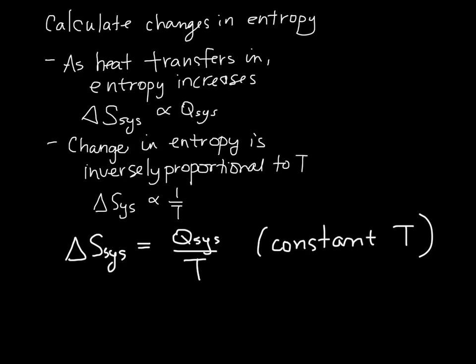If the temperature isn't constant, we can instead write it like this, dS, and consider the incremental amount of heat transferred divided by T. And then we can integrate both sides to find out what the actual change in entropy is, and so then we end up with this.